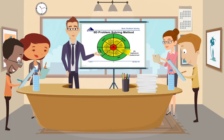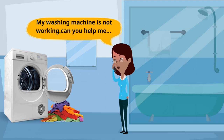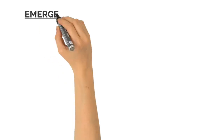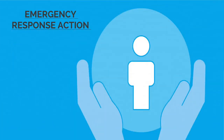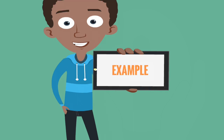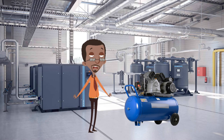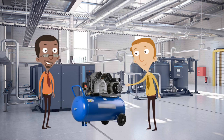The customer is not really bothered whether we are doing a detailed 8D or not — he just wants an immediate solution. In case of a breakdown, if he gets his response, he is quite happy. Emergency response action should be taken to protect the customer. For example, in case of a compressor breakdown, a standby compressor is provided immediately within an hour.